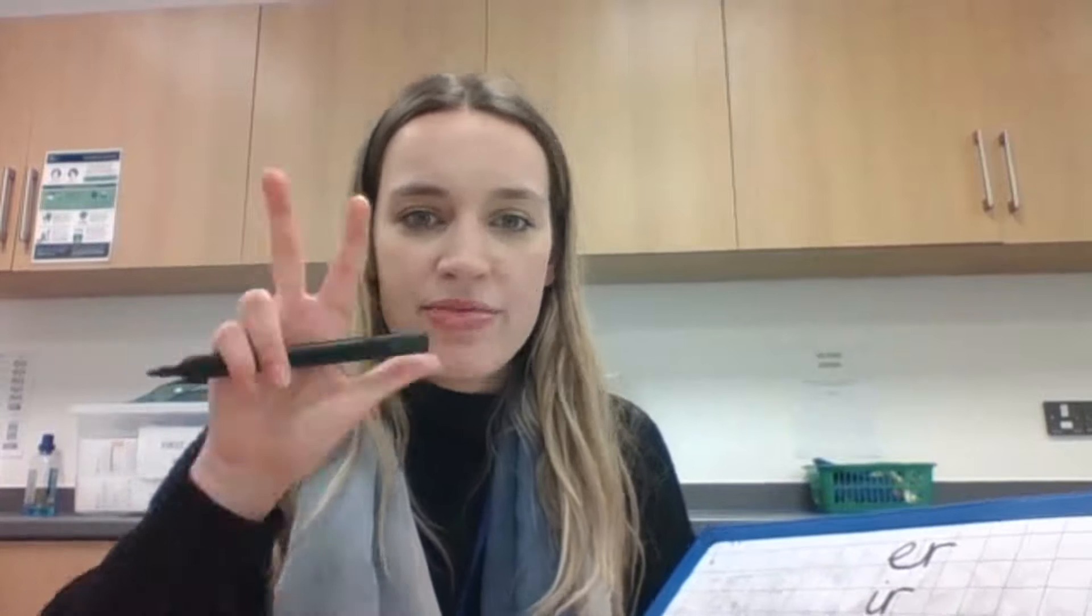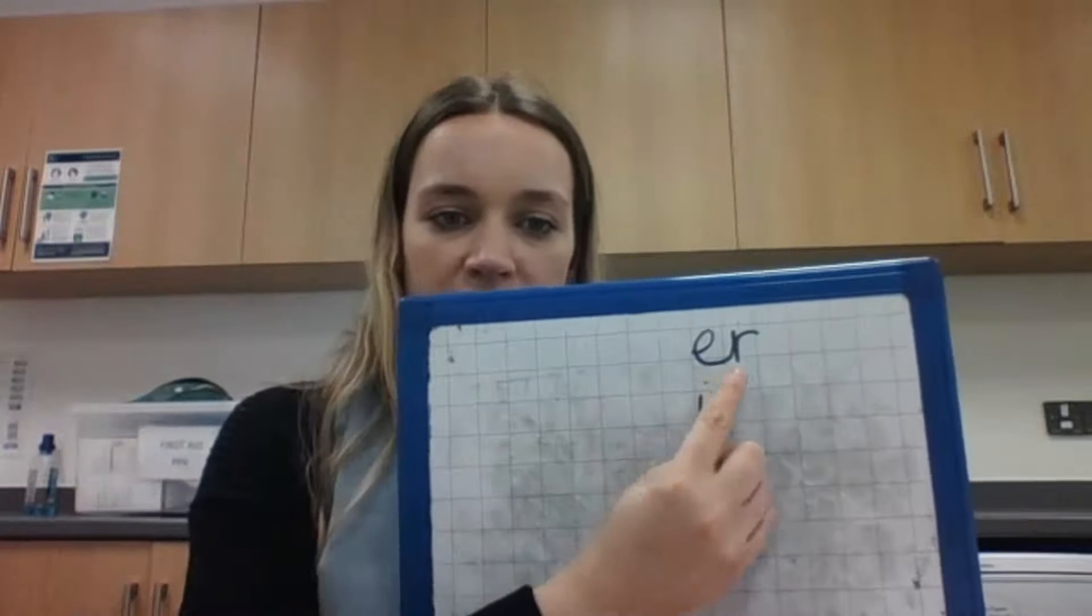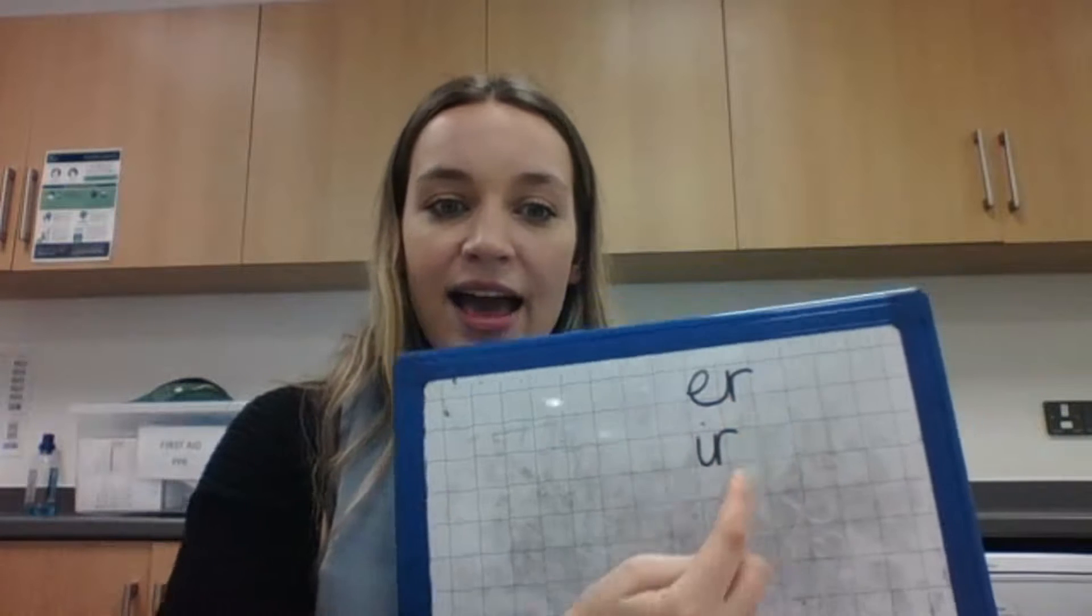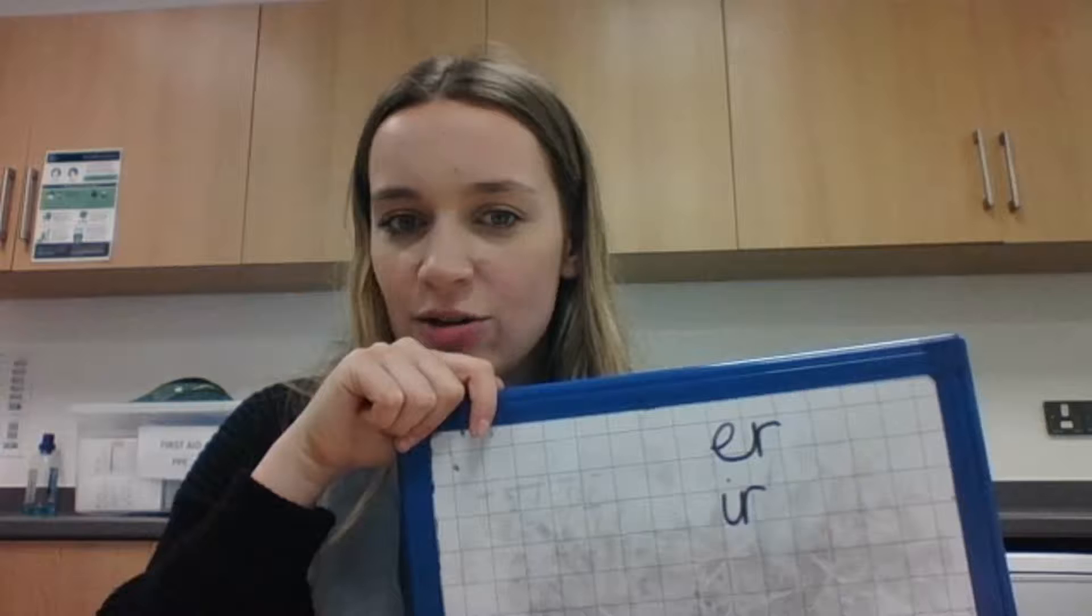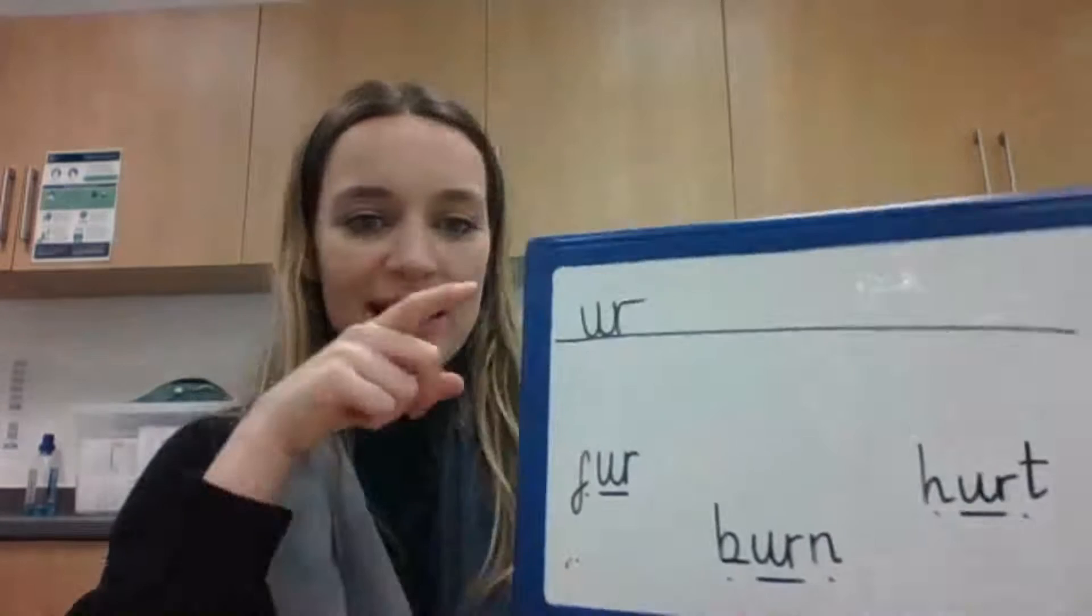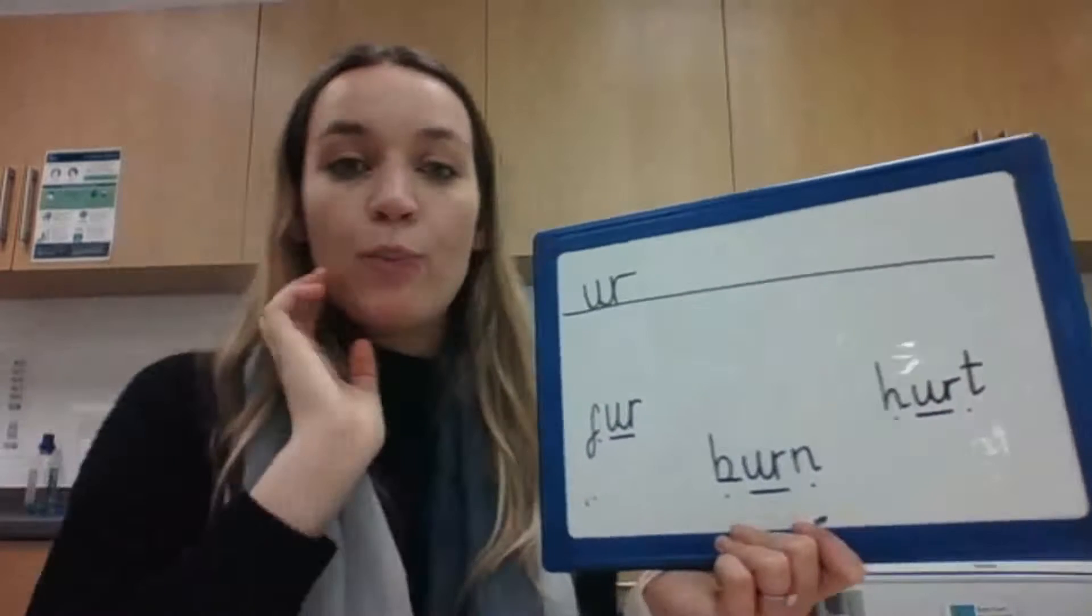Hi everybody! Today we are learning another spelling of the 'uh' sound. There's so many different spellings for lots of sounds, and we are going to learn three ways of writing the 'uh' sound. Now we've already learned how to write the 'uh' sound with the E and R, and the I and R, but hopefully you've watched Mr. Thorne tell you the spelling for today, which is U and R, just like that.